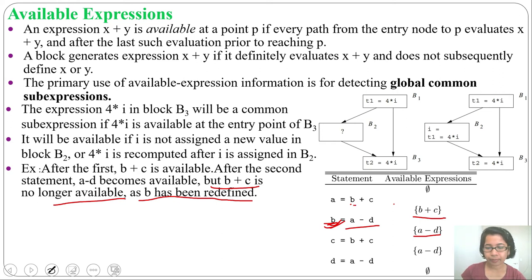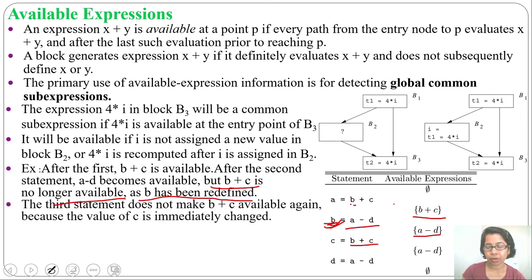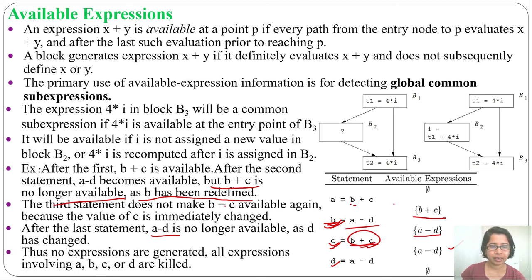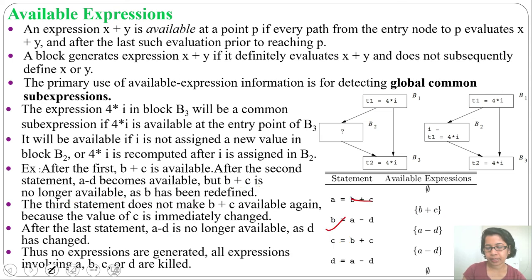After the third statement, B plus C is not available because C value is immediately changed — B plus C is assigned to C, so C is redefined. Only A minus D is available. Next, D equals A minus D: after this statement, A minus D is also no longer available as D value is re-defined. So all expressions involving A, B, C, D are killed. No expression is available at the end of these four statements.